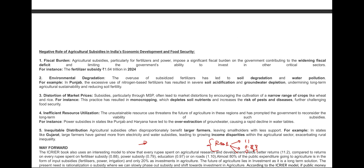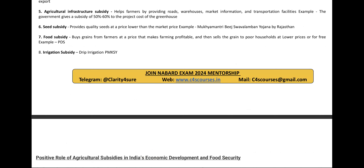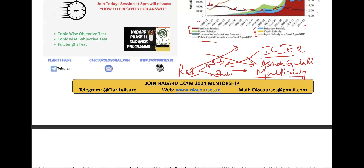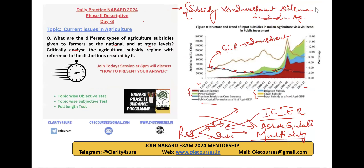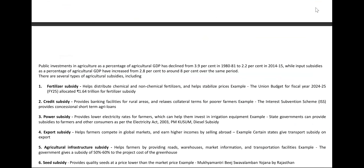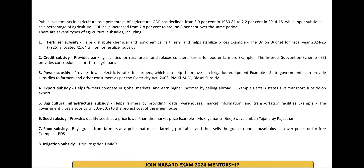Let's go back to where we started. The situation is clear: the solution now is to rationalize the subsidy. We should slowly phase out from subsidy and move towards investment — that is a very good point to remember. Now let's come back to the question. The first part of the question was: what are the different subsidies in agriculture?